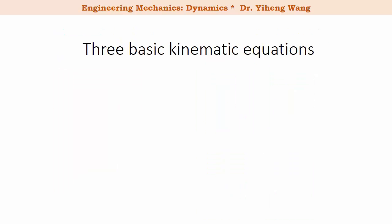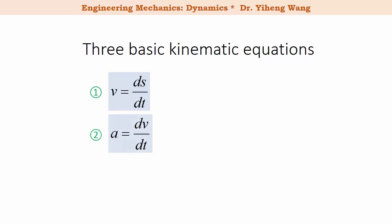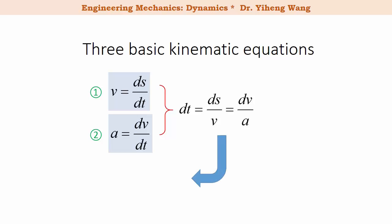Now we have learned the first two basic kinematic equations: velocity v equals ds/dt, and acceleration a equals dv/dt. If we combine these two and cancel out dt from both equations, we get the third kinematic equation: a·ds equals v·dv, which directly relates a, s, and v. This third equation does not involve time.